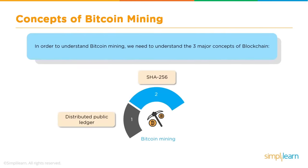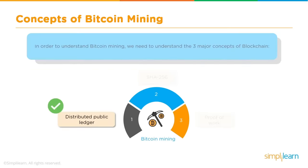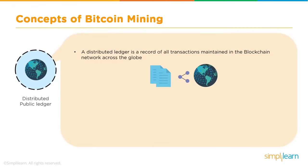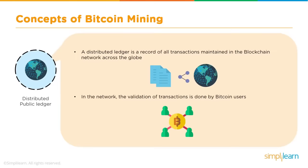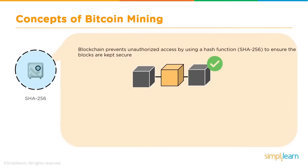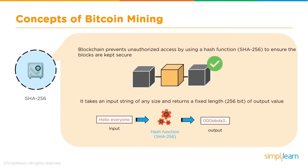A distributed public ledger is a record of all transactions maintained in the blockchain network across the globe, with validation done by miners. SHA-256 prevents unauthorized access by generating a hash function — once generated, it cannot be altered. SHA-256 takes an input string of any size and returns a fixed-length 256-bit output. It is a one-way function — you cannot derive the input from the output. The third concept is proof of work: mining is the process of validating transactions by solving a difficult mathematical puzzle called proof of work.